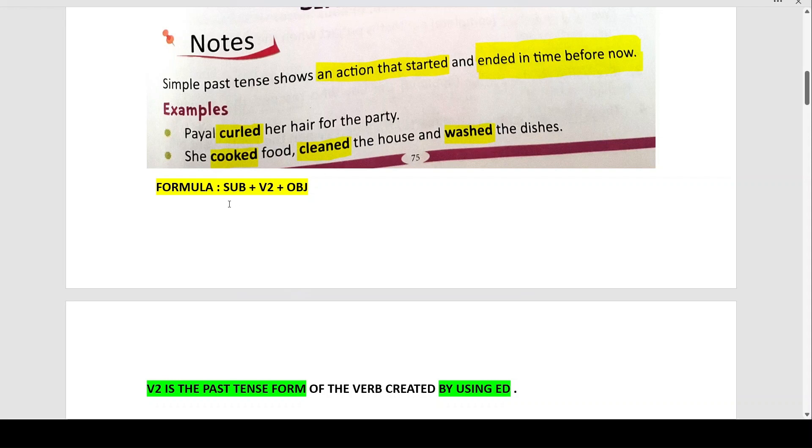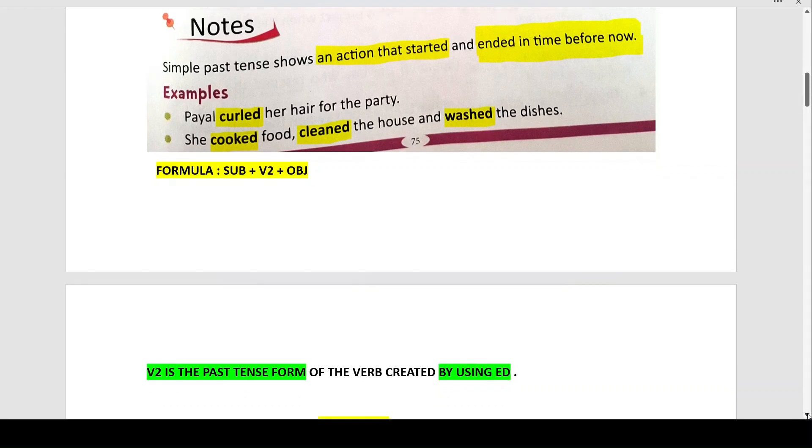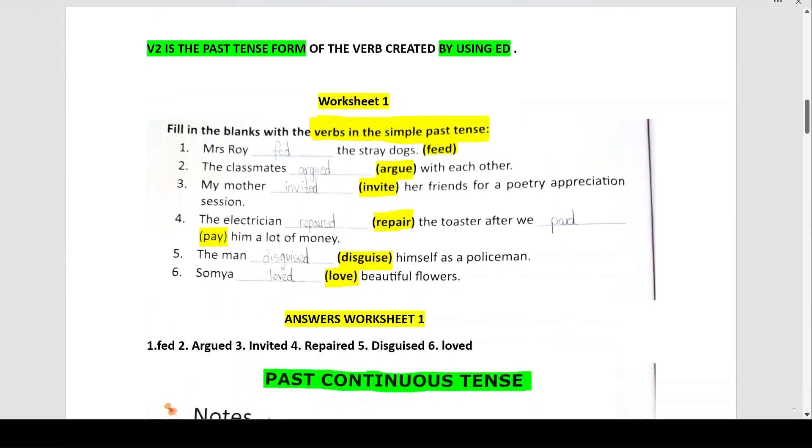So the formula for simple past tense is: Subject plus V2 form of the verb plus object. V2 is the past tense form of the verb created by using ED. So we have feed, the past tense is fed. Subject is Mrs. Roy, followed by V2 form fed, and the object is stray dog.